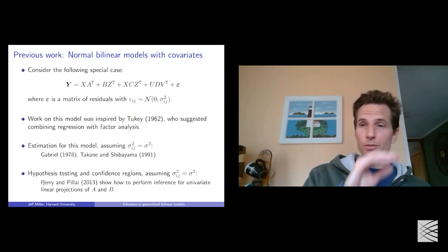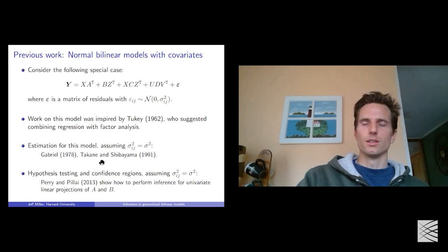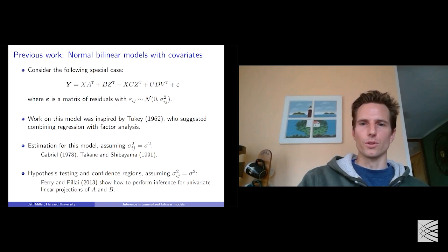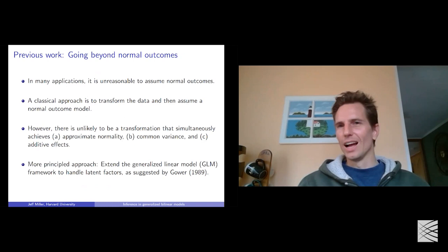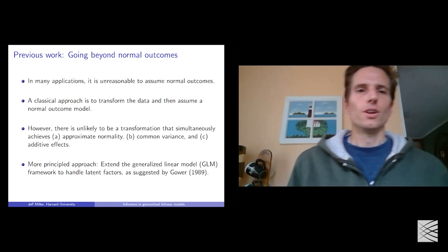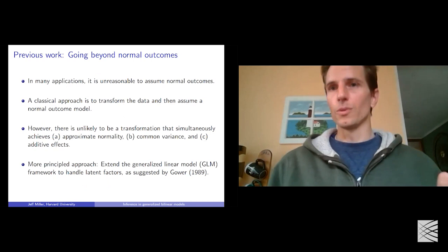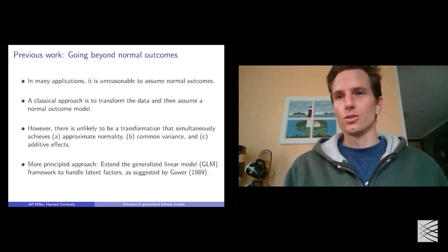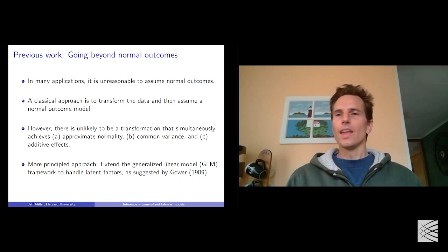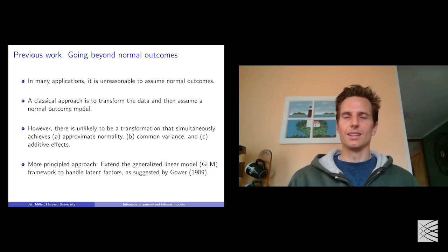To go beyond normal outcomes and handle count data from sequencing, a classical approach is to transform the data — for example, taking log of data plus a pseudo count, or a square root transformation — and then applying a normal outcome model. The issue is that such transformations carry implied assumptions. Unfortunately, it's unlikely that any single transformation will simultaneously give you approximate normality and the other desirable properties needed for valid inference.